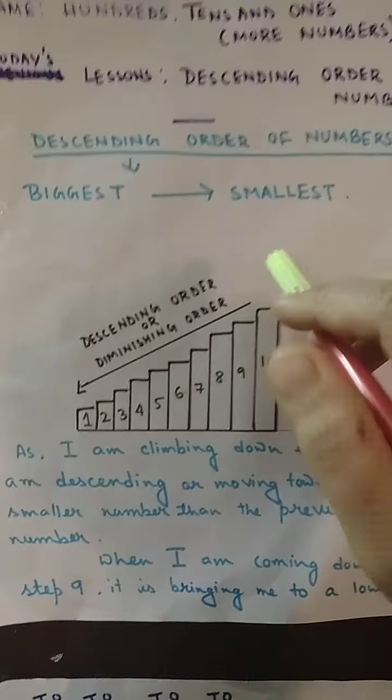Now, you can see that I have drawn one step over here. When I am climbing down one step from 10 to 9, I am descending or moving towards a smaller number. As I come down to 8, you will see that 8 is smaller than 9. When I come to 7, it is even smaller. So as I climb down each step, I am moving to a lower number — 10 is the biggest, and 1 is the smallest.